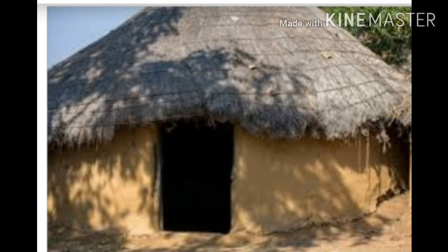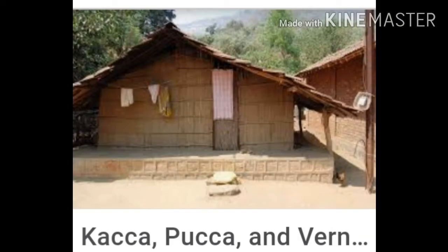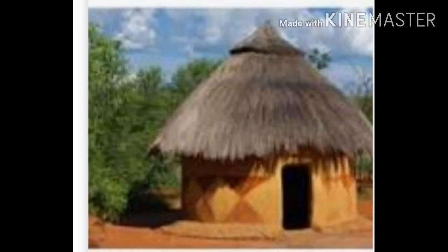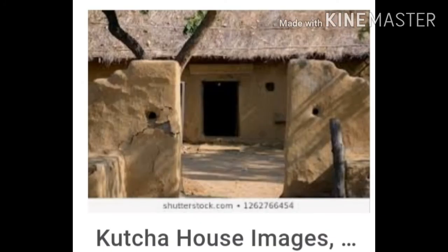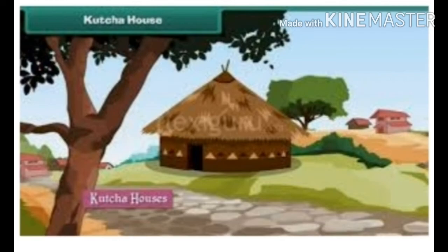These houses are made up of mud and straw and they are not very strong. Kacha houses are even made of wood and those types of houses are called wooden houses. Mainly they use bamboos to build houses.